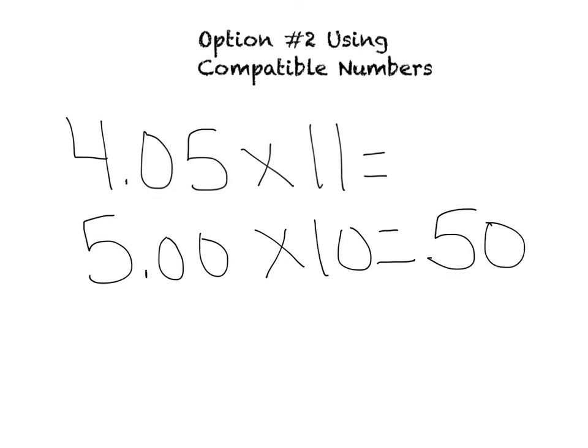So that's all there is to it, you guys. All you're doing when you are using compatible numbers is you are looking at your problem and you're rounding it either up or down to numbers that are easy to multiply mentally. If you go to multiply them mentally and you can't do it, then you rounded wrong. Rethink your strategy.